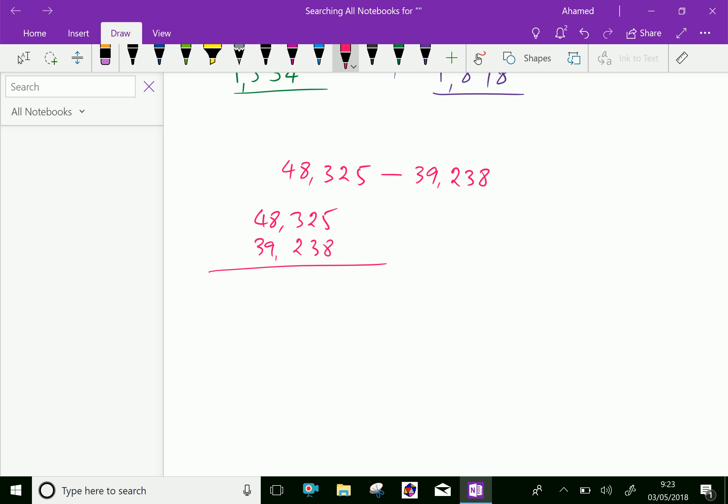For this subtraction, we write in alignment. 5 minus 8 will not work, so get 1 from the neighbor. It becomes 1, and this becomes 15. 15 minus 8 is 7.